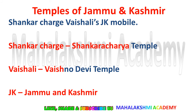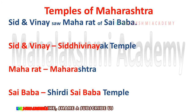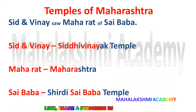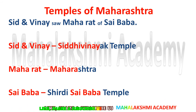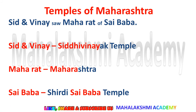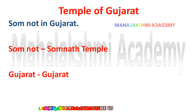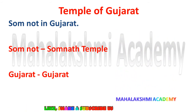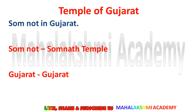Temples of Maharashtra — 'Sidd and Vinay saw Maharat of Sai Baba.' Maha means big. Sidd and Vinay is for Siddhivinayak temple. Maharat reminds you of Maharashtra. Sai Baba is for Sai Baba temple. Temples of Gujarat — 'Soma is not in Gujarat.' Soma not is for Somnath temple, and Gujarat reminds you the trick is related to Gujarat.